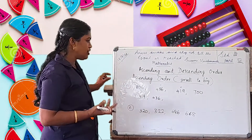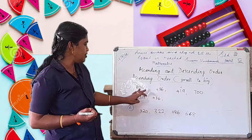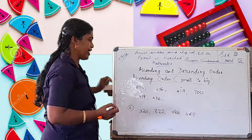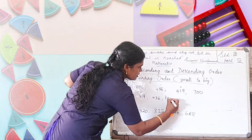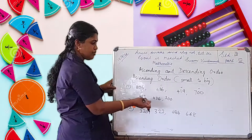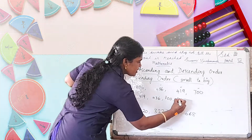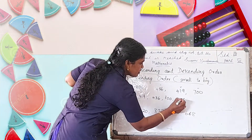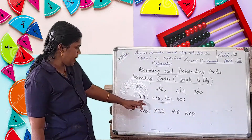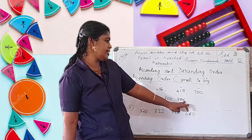Then we have two numbers only: 806 and 700. The smallest number is 700. Then the last number is 806. Therefore, the ascending order answer is 419, 436, 700, and 806.